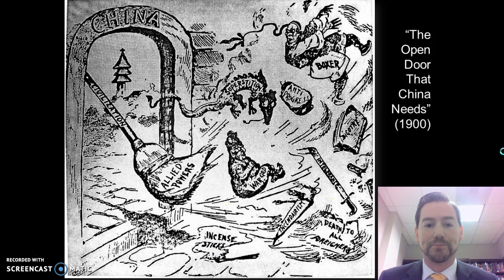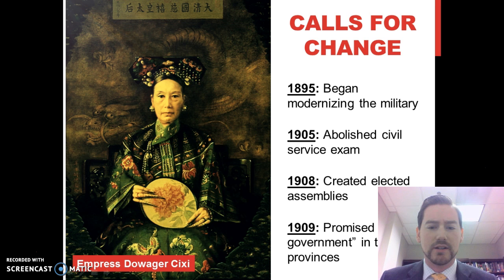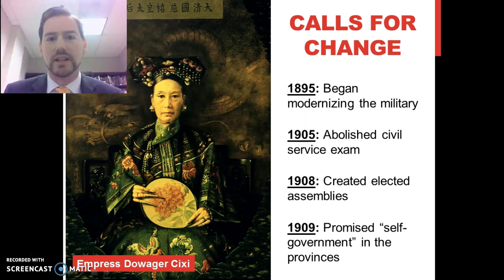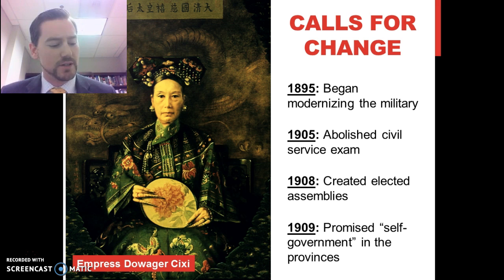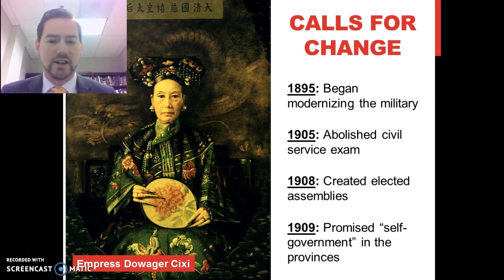The calls for change from the Qing government were too little, too late. The Qing dynasty tried to make changes — in the late 1800s going into the early 1900s they began to modernize the military, abolished the civil service exam, created elected assemblies, and promised self-government in the countryside. But this just wasn't enough to satisfy the people.